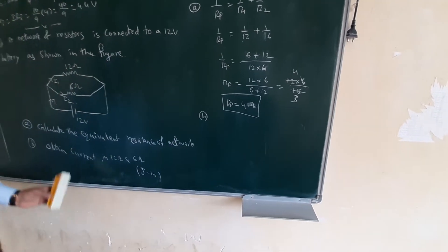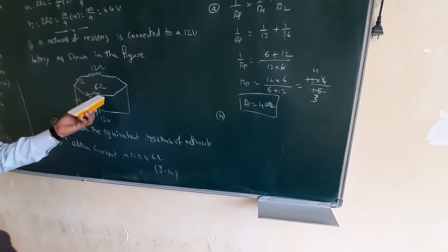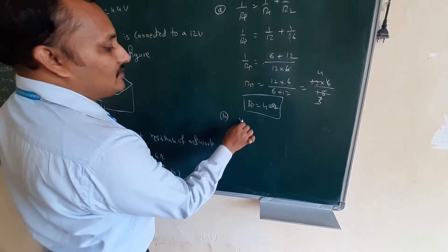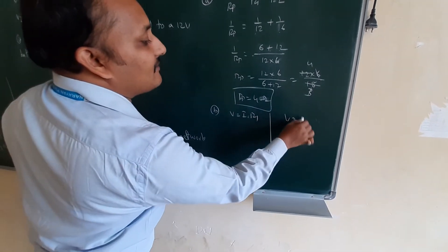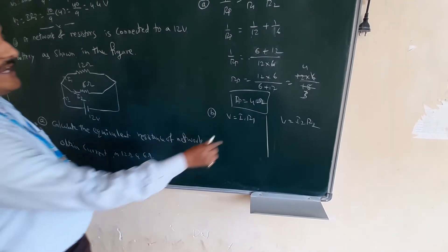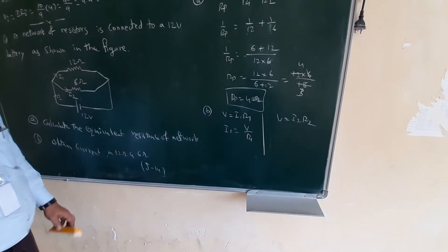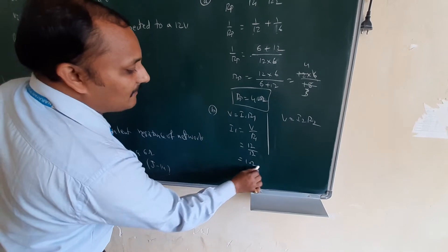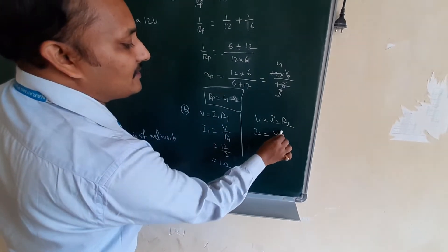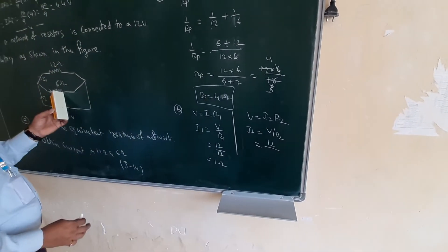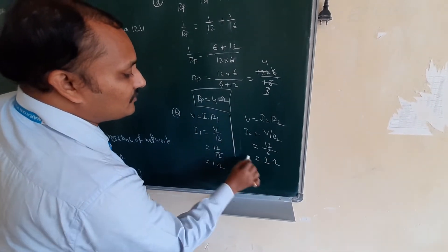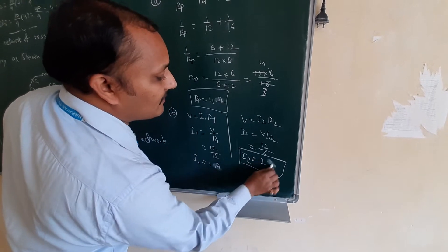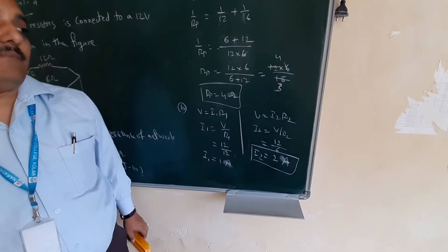Next, they ask for the current through each resistor. When two resistors are connected in parallel, the potential difference across each is the same. So V = I1 × R1, giving I1 = V/R1 = 12/12 = 1 ampere. And I2 = V/R2 = 12/6 = 2 amperes. Current is measured in amperes.